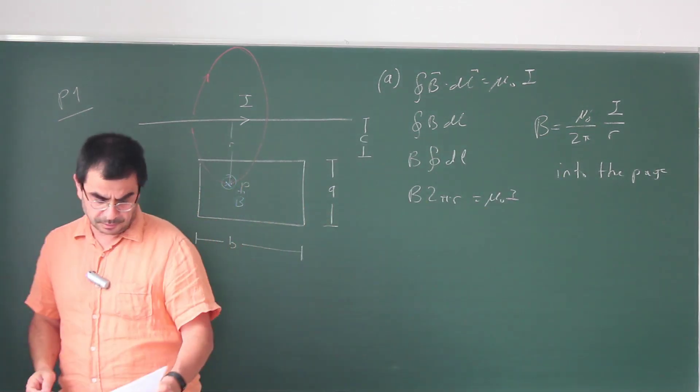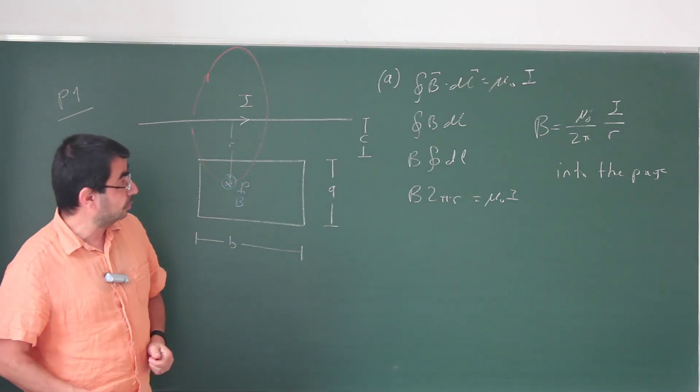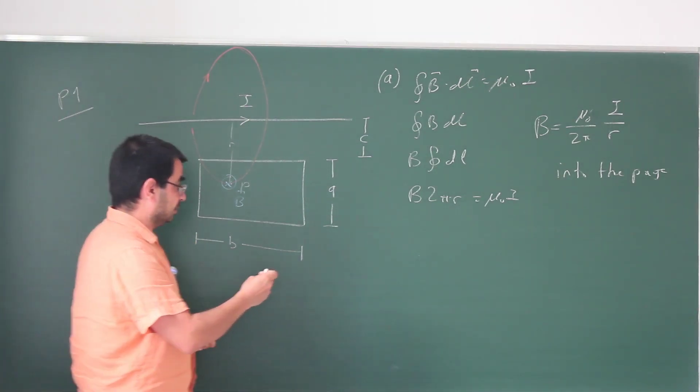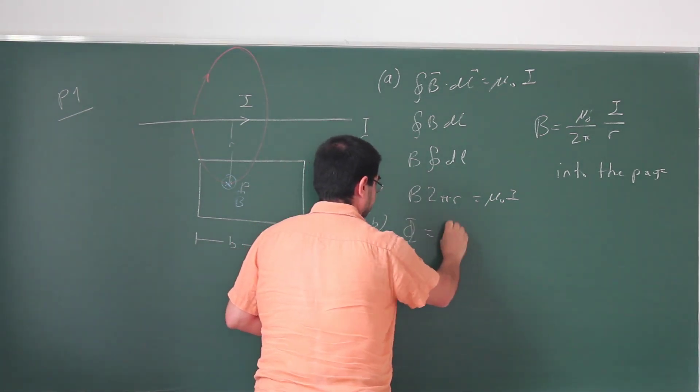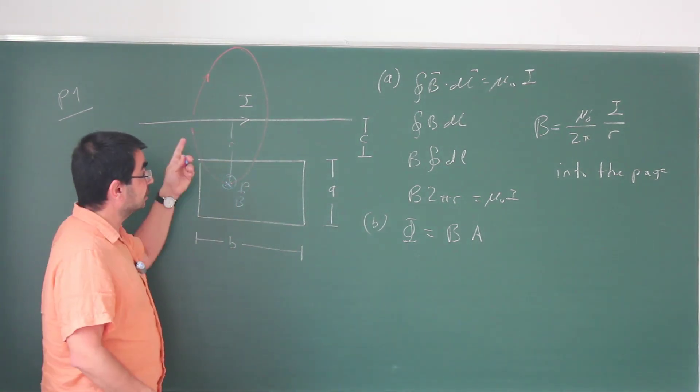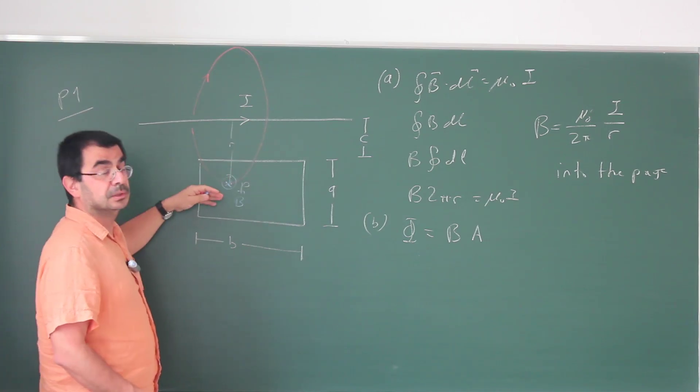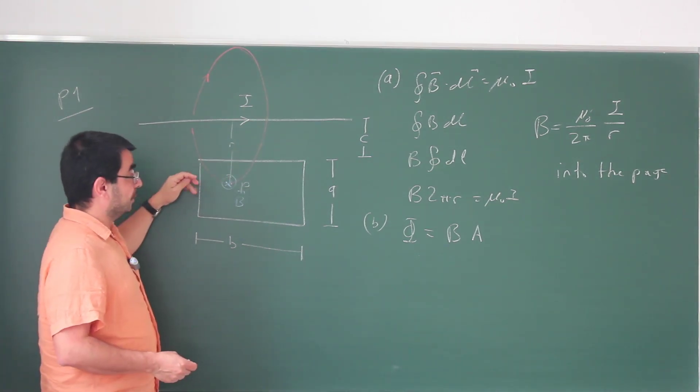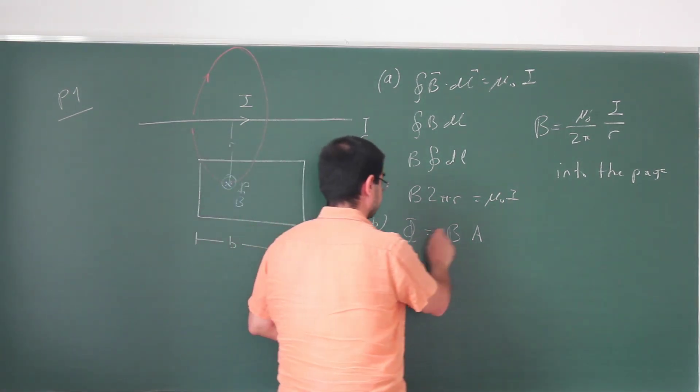Now for part B they're asking to calculate the magnetic flux phi B through the loop. Magnetic flux typically is just B times A but this is for a uniform magnetic field and in this case the magnetic field is not uniform. So what we need to do is to divide this area into little parts such that in each of those parts the magnetic field is going to be uniform, then I can apply this formula. So this doesn't work.